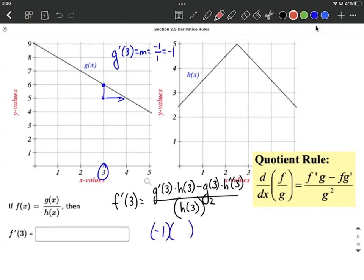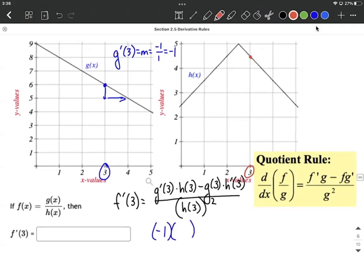That's supposed to be multiplied by h of 3. So 3 over here on h's graph looks to be at 4.5. All right, h of 3 is 4.5. We're looking at the actual point on the graph there, not the slope of the line.